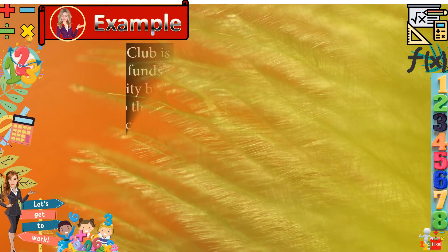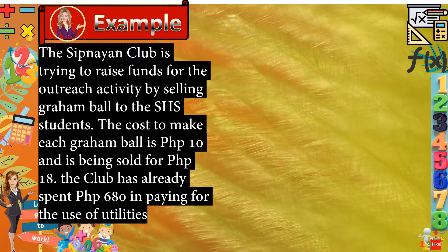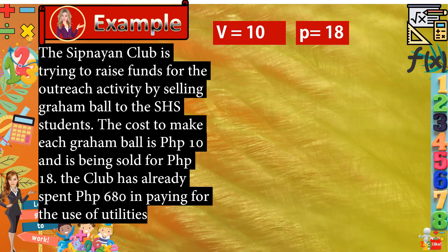For example, the Sipnayan club is trying to raise funds for the outreach activity by selling graham ball to the SHS students. The cost to make each graham ball is 10 pesos, being sold for 18 pesos. The club has already spent 680 in paying for the use of utilities. With this given problem, let us list down all the given values. It says to the problem that the cost to make graham ball is 10 pesos. With this, it gives us the variable cost v=10. Next, we have 18 pesos. It says here the graham ball is being sold for 18 pesos. That gives us the price p=18. Last value, we have 680 pesos. It says here it is used for paying the utilities, which is the fixed cost f=680.